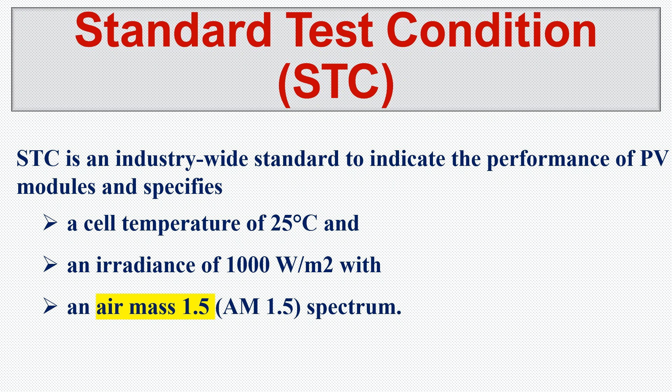This 300 watts is the standard measure we take from the manufacturers, and we try to get the same scenario on our house rooftop. If we get the same scenario, we can get the same output. Usually we can't get 25 degrees cell temperature or 1000 watts per meter square all the time, but we can get it for at least half an hour or one hour during peak sun hours. Air mass 1.5 we also can't get all the time, but we can get it sometimes when the sun is in the right position.